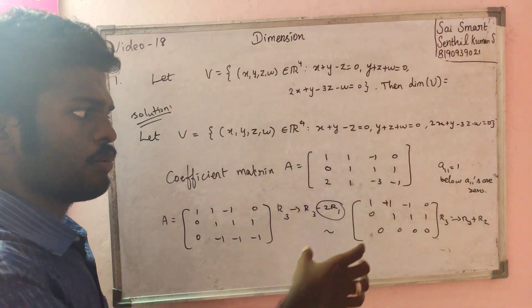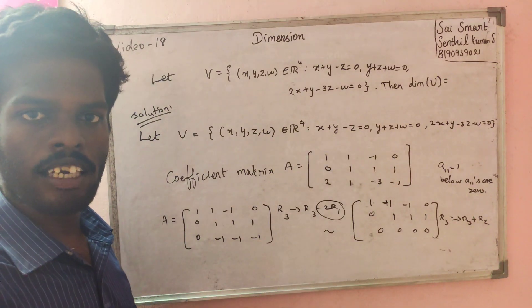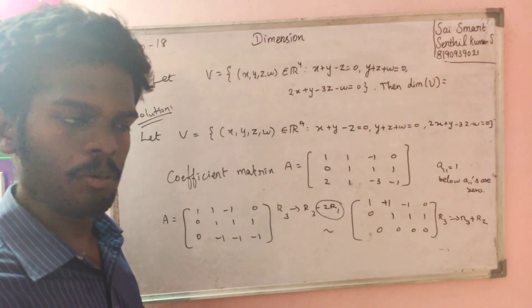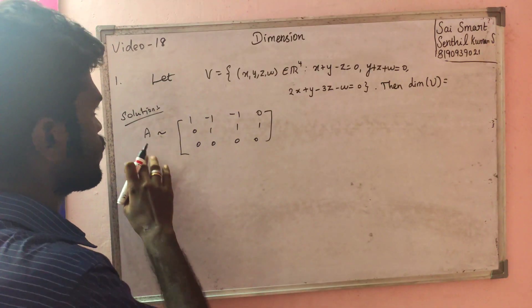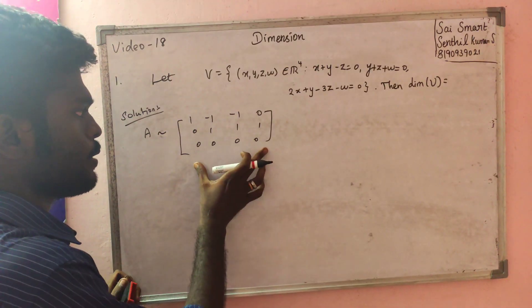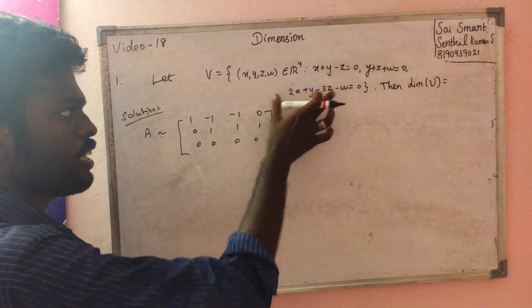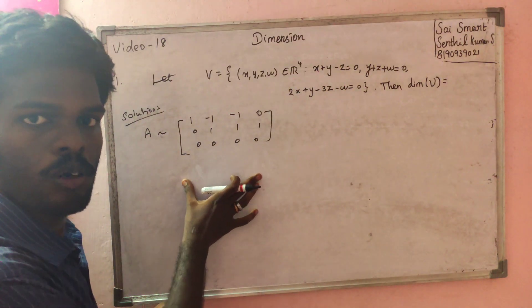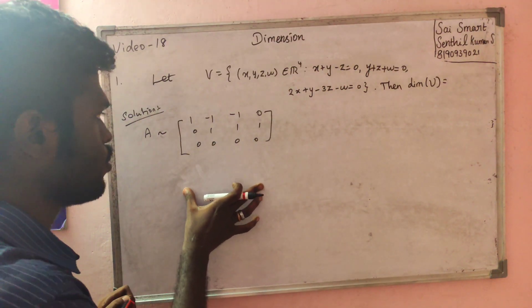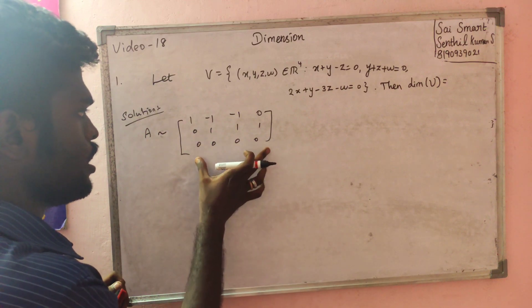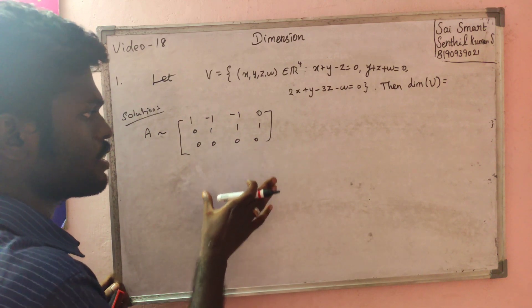This is the coefficient matrix. They like the echelon form. We have to matrix it. Now we have the A matrix — this is the row echelon matrix. You can make a difference.